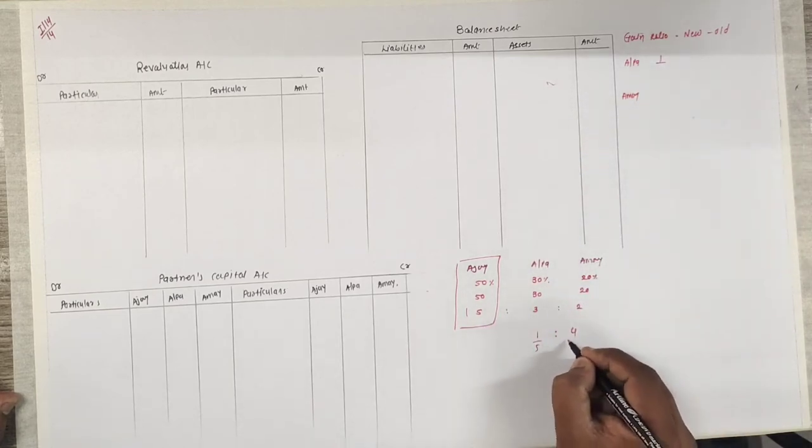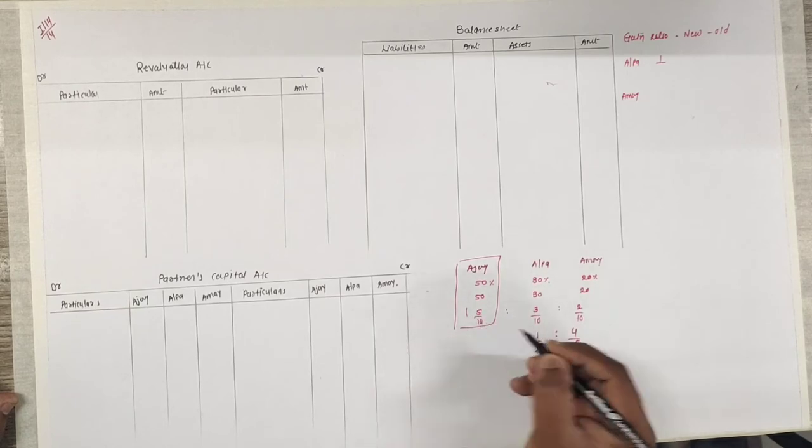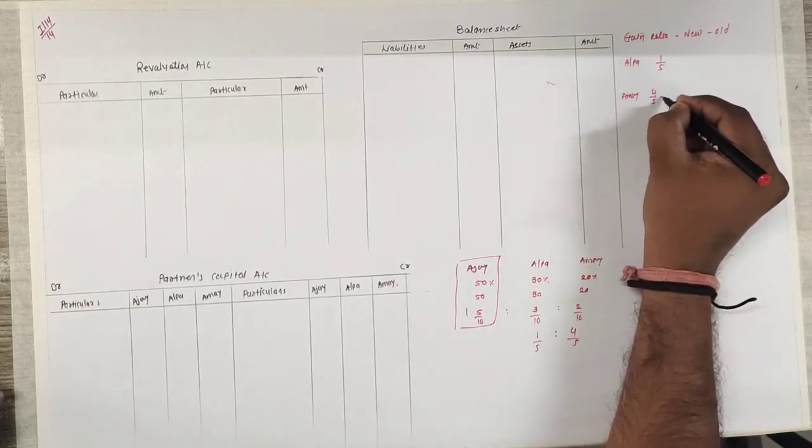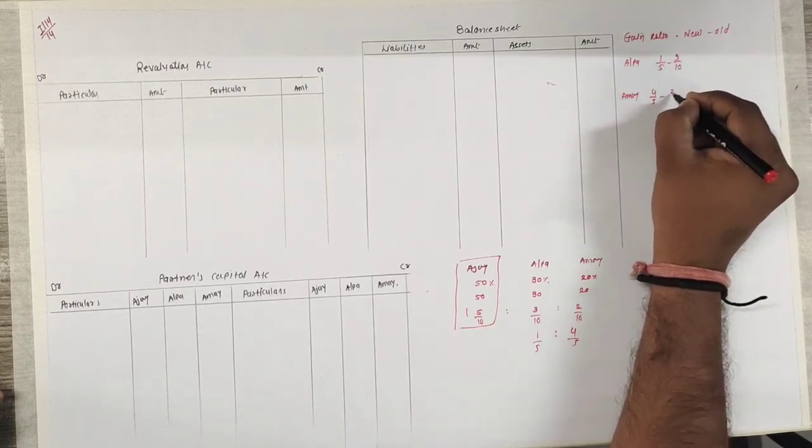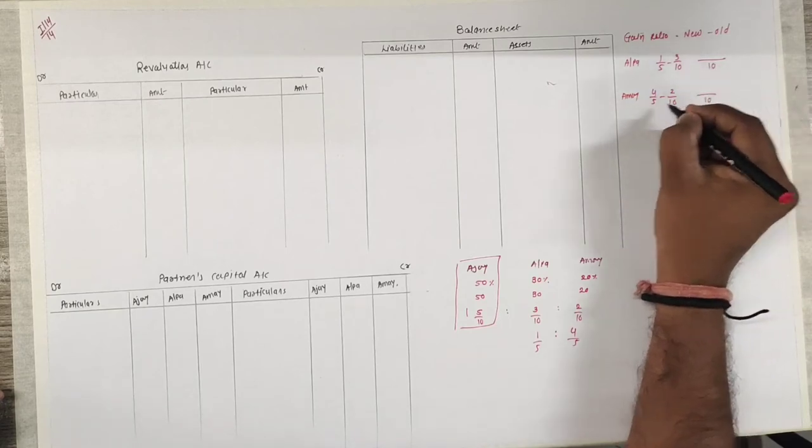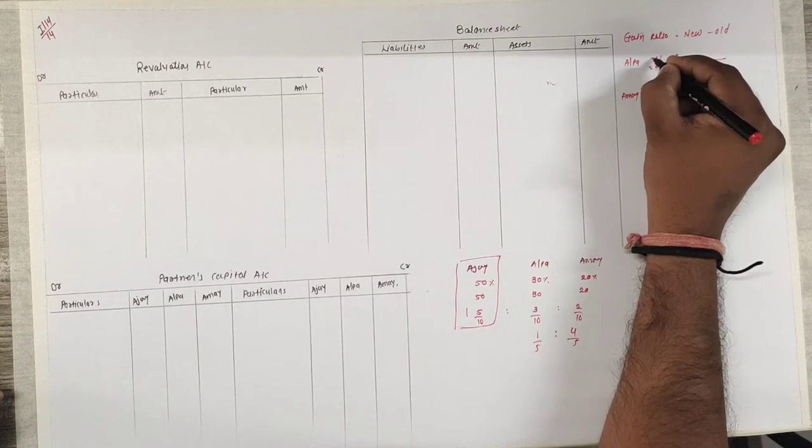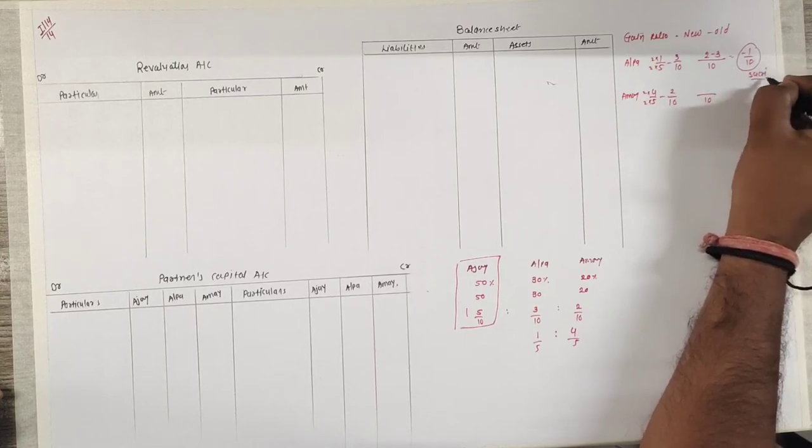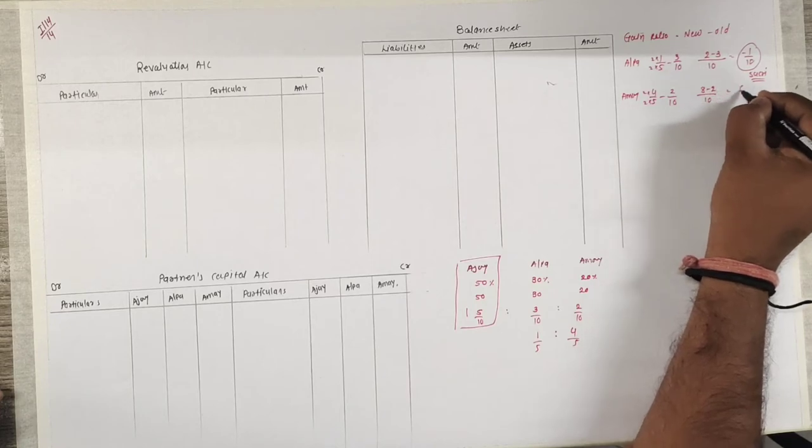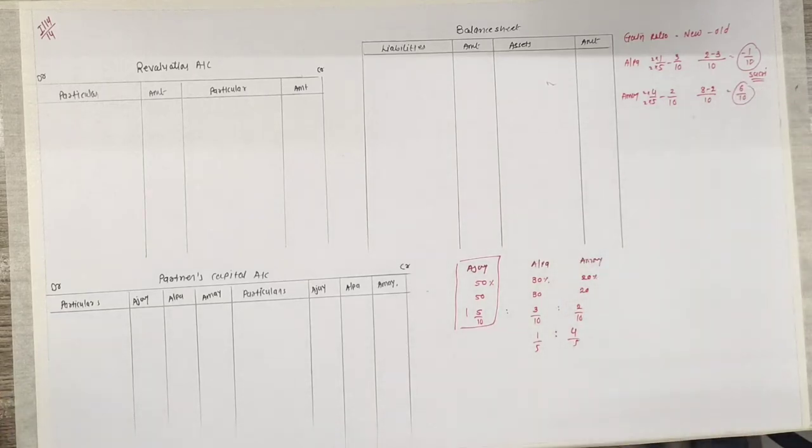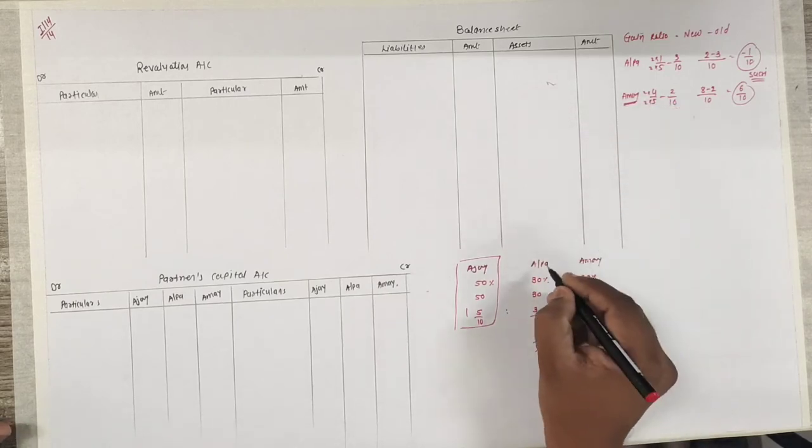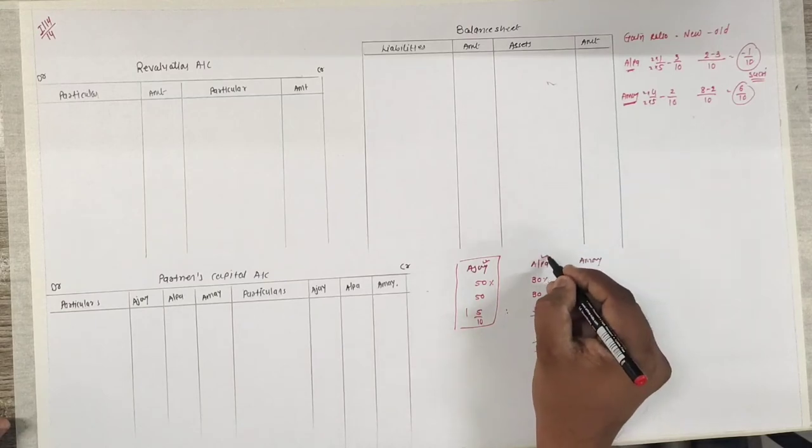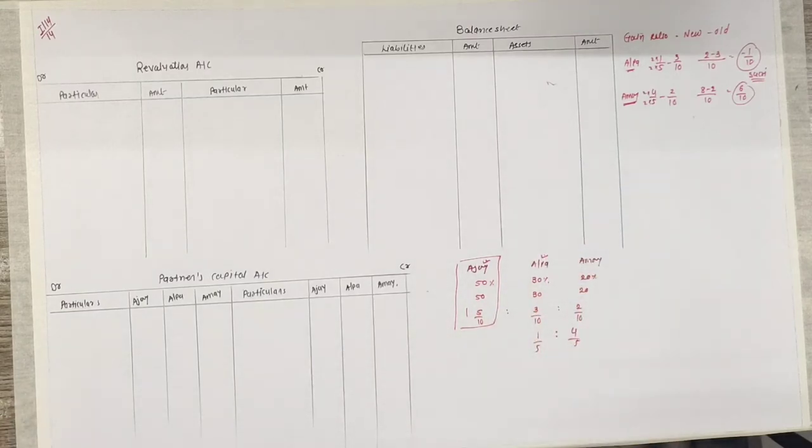Fixed assets is to be appreciated by 20%. The book value of stock is overvalued by 600 compared to its cost, so stock pe tick mark karna hai. The value of goodwill of the firm is 1 lakh. Ajay is to be paid 10,000 in cash, so cash pe tick mark karna hai because we haven't made a cash account anywhere. And last one, the new profit and loss sharing ratio of Alpa and Amai is 1 ratio 4. So Ajay is retired. So first I will find the gain ratio: new share minus old share.